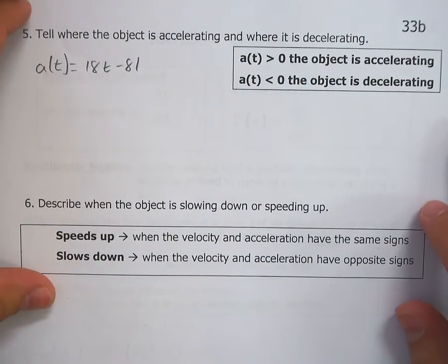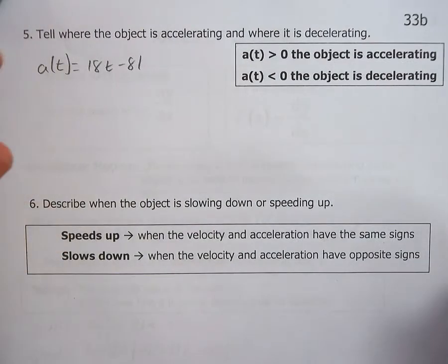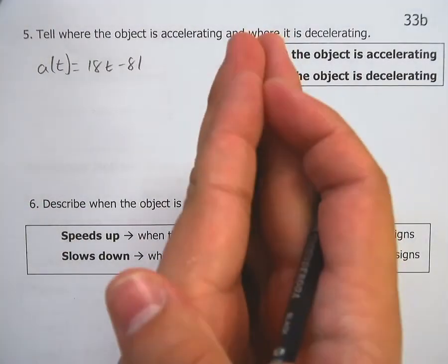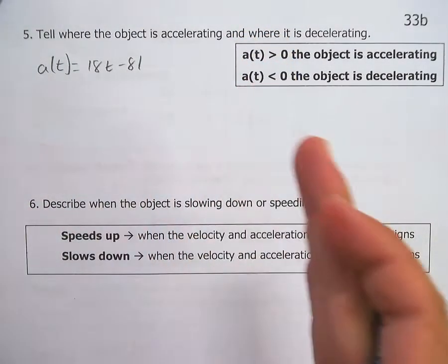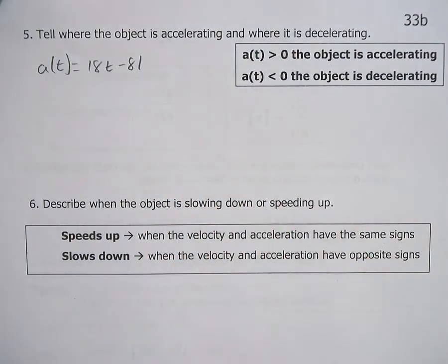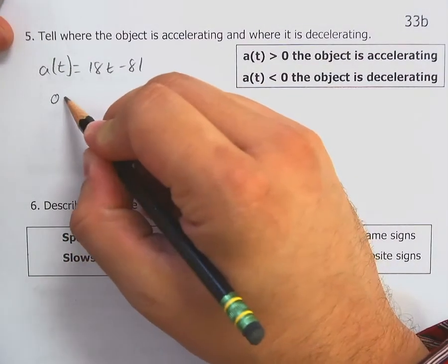All right. It says it wants to know where the object is accelerating. So again, where's your division line? Where does it change from accelerating to decelerating, or vice versa? That happens when acceleration is zero.